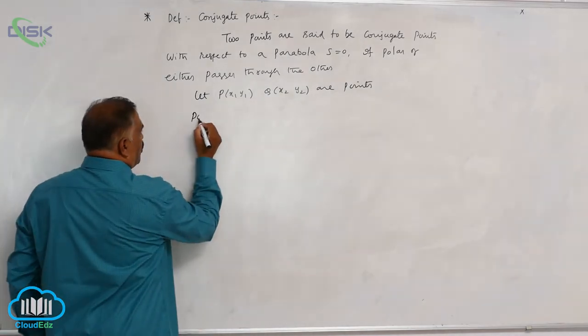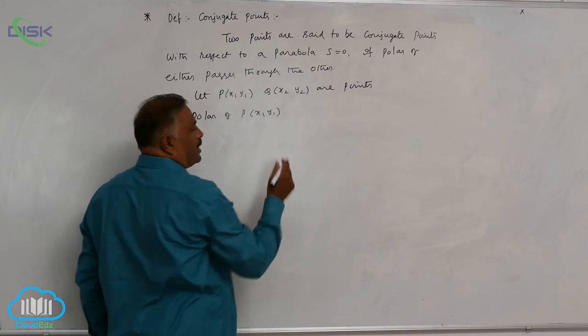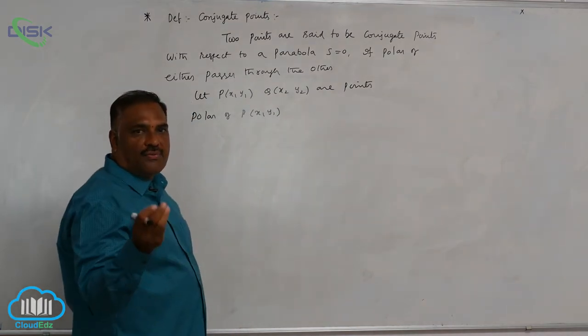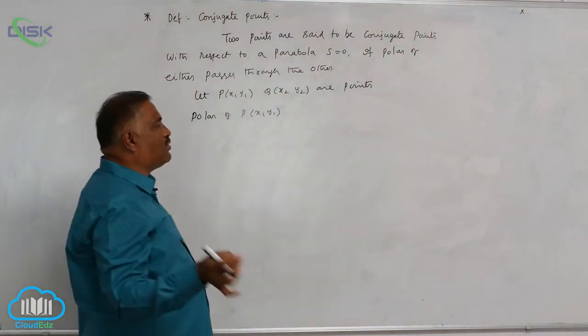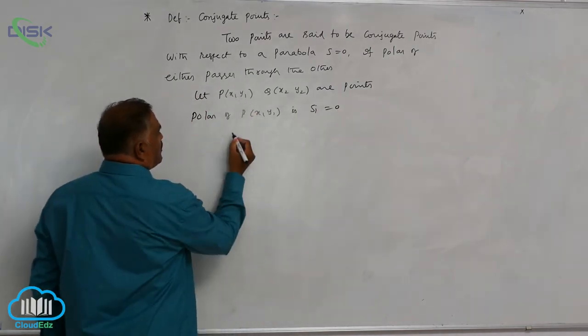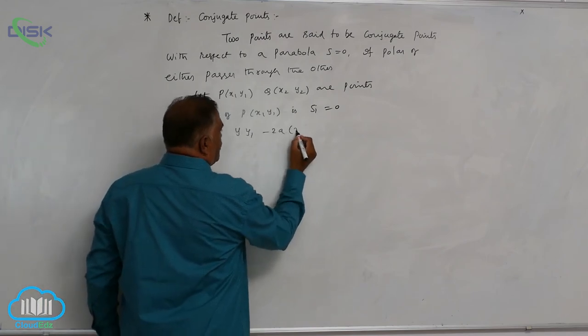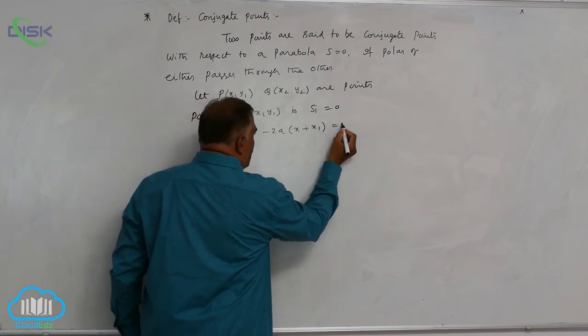Now consider polar of P (x₁, y₁). As usual, we know that polar of any point is S₁ is equal to 0. Now that is yy₁ minus 2a into (x plus x₁) is equal to 0.